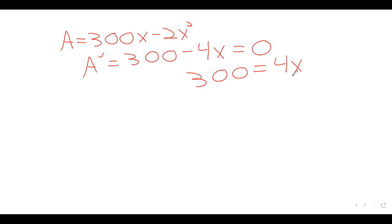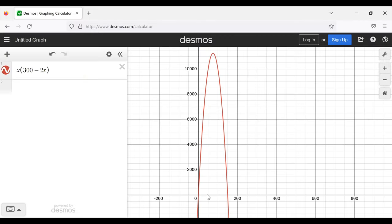We set A prime equal to 0 because we're looking for critical values. 300 equals 4X. 300 divided by 4 is 75. Beautiful. Here's 50, here's 100. Midway between 50 and 100, just like we see on the graph.